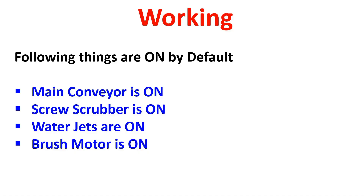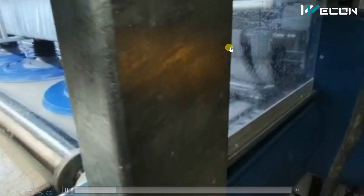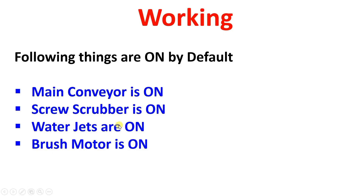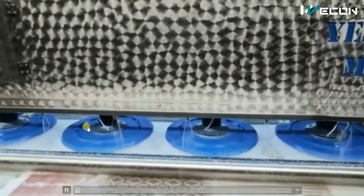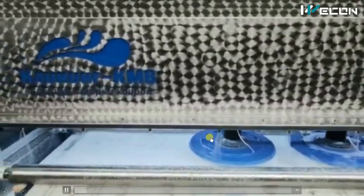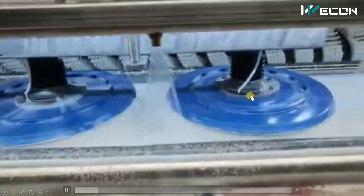Let us see how this machine works automatically. There are some things which are on by default when we turn on the machine. First is the main conveyor which is moving the carpet. After that, the screw scrubber — you can see this screw type scrubber which is moving hard particles from the carpet. After that, water jets, detergent water jets, and fresh water jets are always on. The brush motor is always on as well — it never stops; its forward and reverse direction is based on sensors.